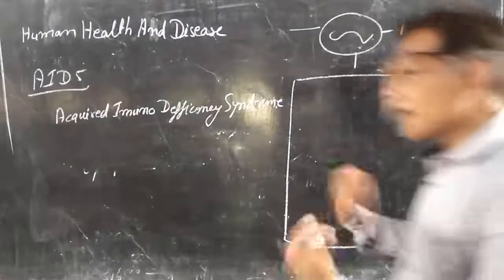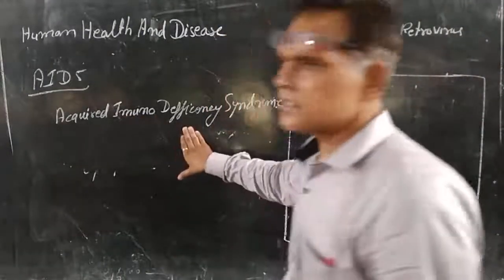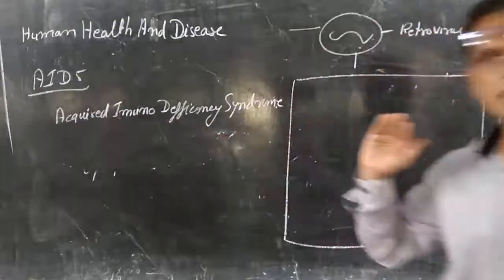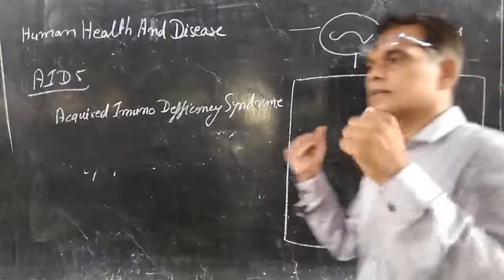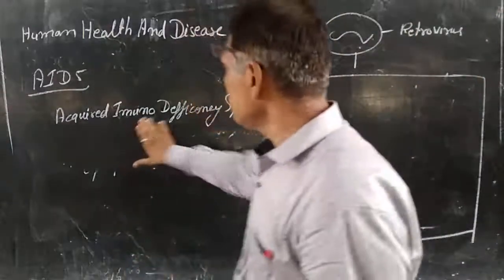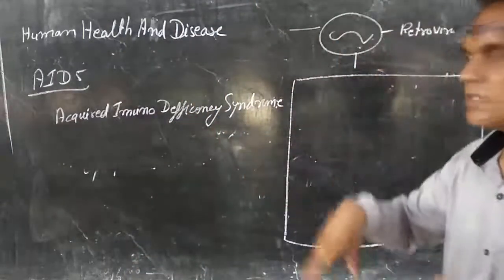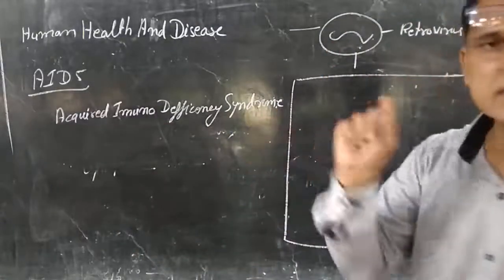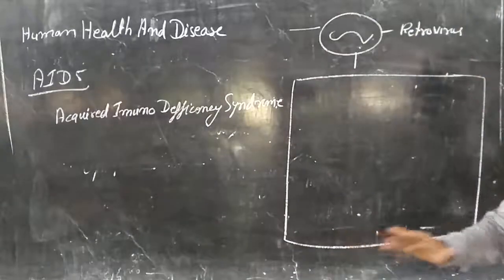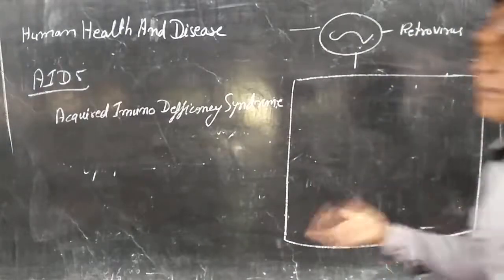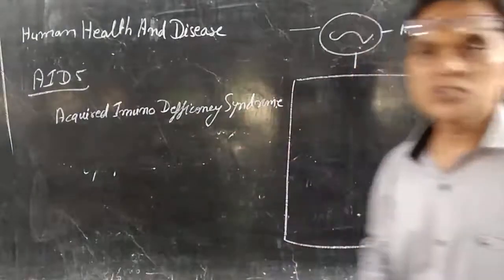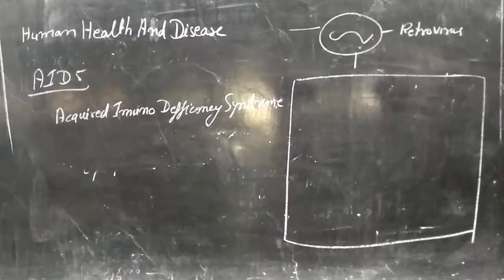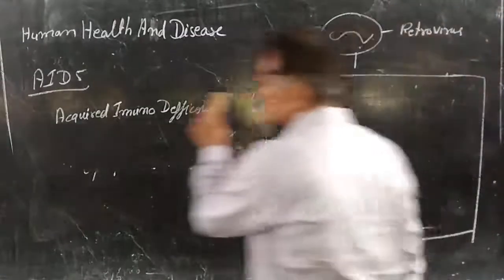Acquired means externally obtained. Immunodeficiency means deficit or destruction of the immune system. And syndrome means it is not a single disease, but we are affected from many or a group of diseases. That is why it is known as syndrome, which is utilized for many diseases. That is AIDS - Acquired Immunodeficiency Syndrome.